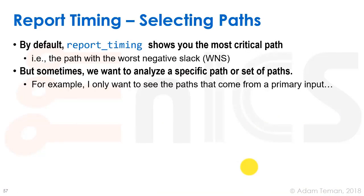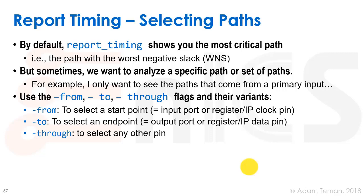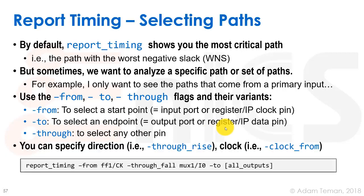By default, report_timing shows only the single most critical path. Sometimes we want to analyze a specific path or set of paths — for example, only paths from primary inputs. We use the -from, -to, and -through flags for this. '-from' selects a start point, '-to' selects an endpoint, and '-through' selects any intermediate pin. We can also specify rising or falling propagation, for example: 'report_timing -from flip_flop_1/clock -through fall:mux_1/I0 -to all_outputs' will show only those paths matching that constraint.